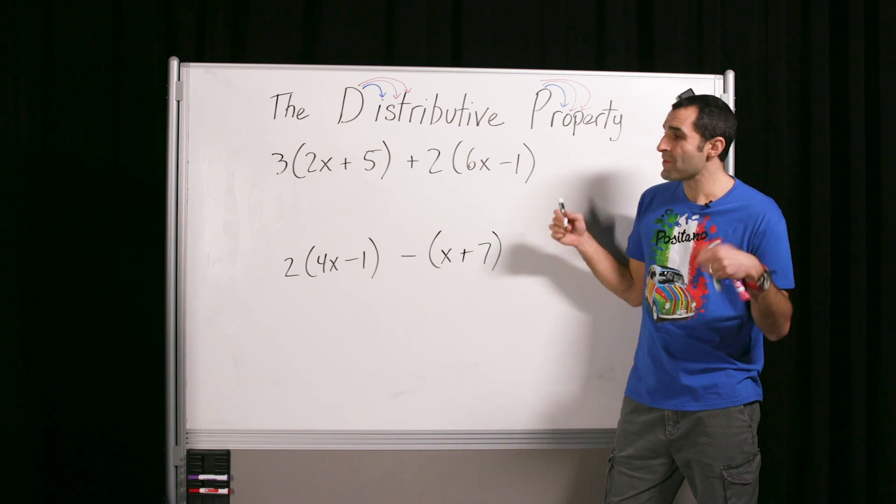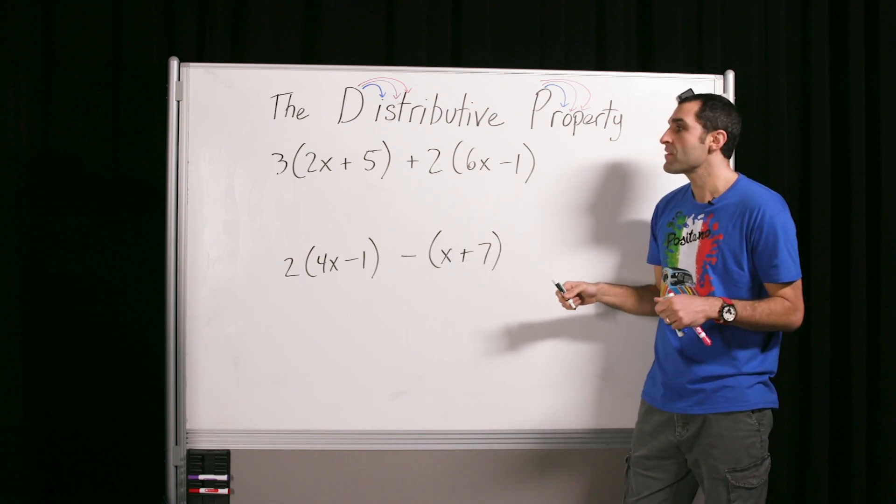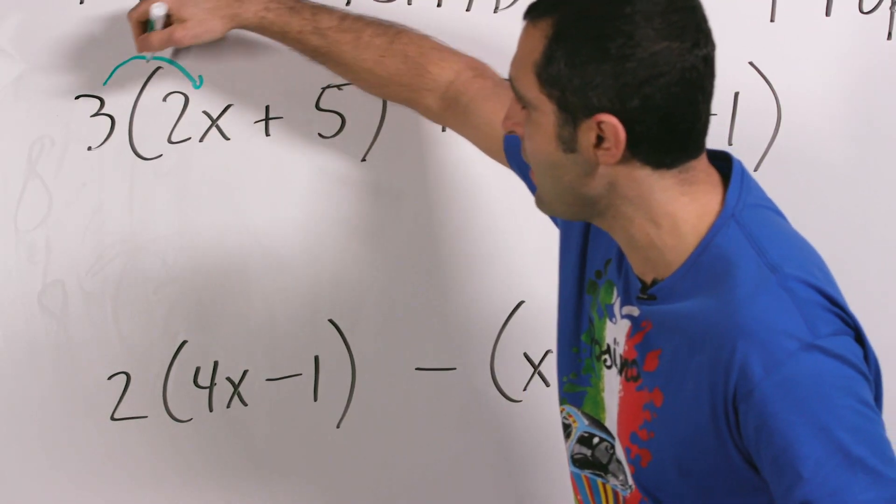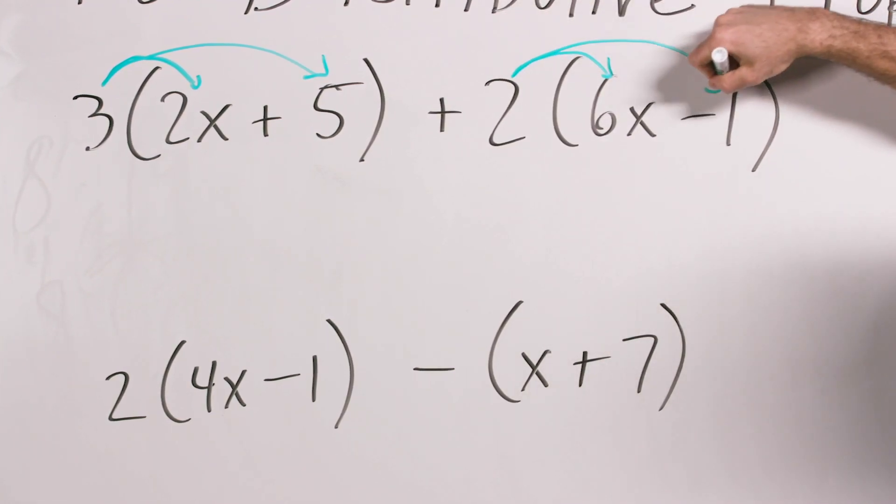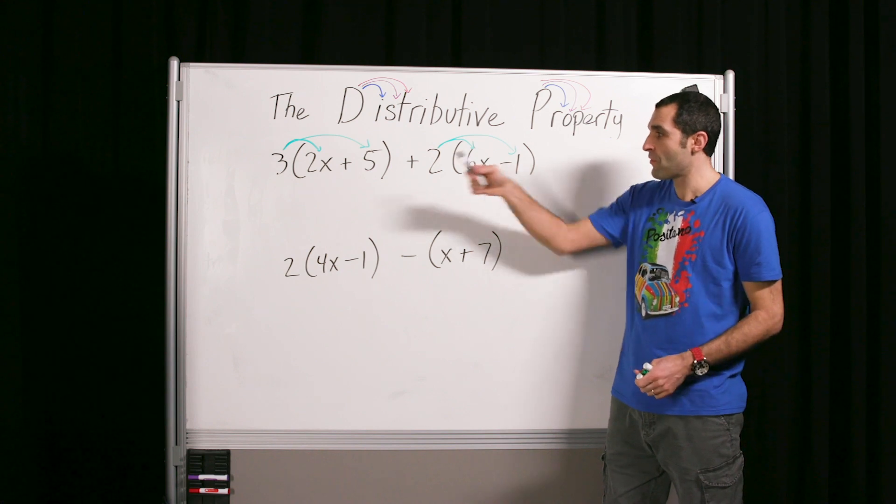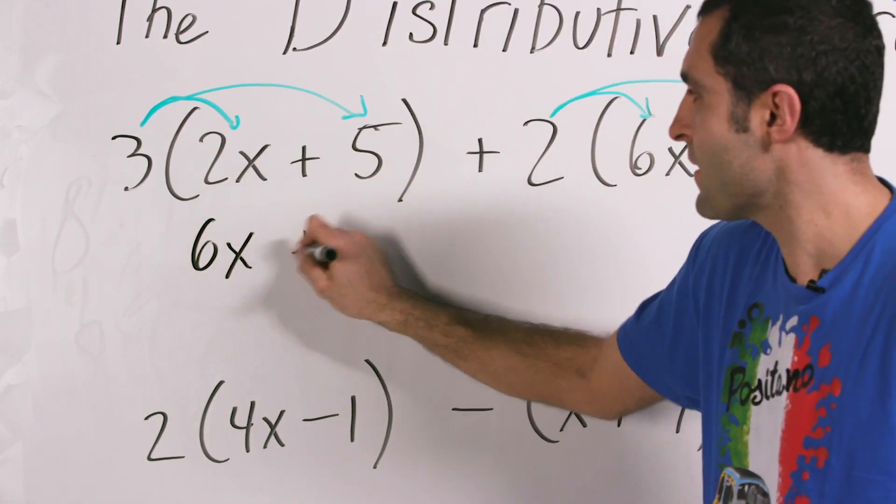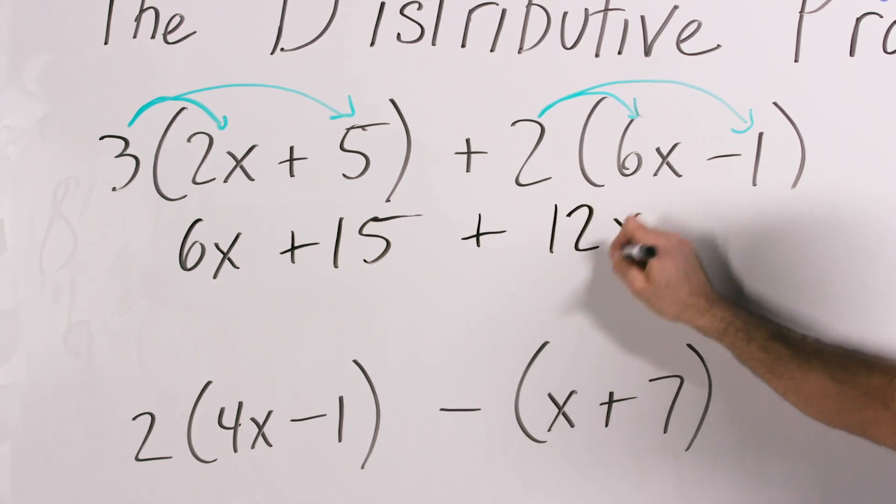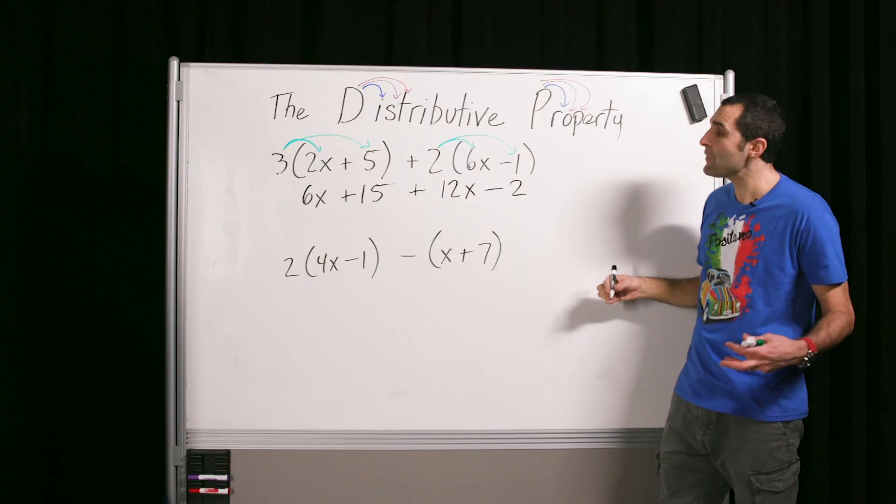Let's do a couple more. So the distributive property also works with simplifying expressions like this. You'll notice we have X's in these little exercises. So we distribute like we've been doing before. The three distributes. And the two distributes. All right. So now that I sang like a duck, we can distribute the 3 and the 2. Let's do it. So we got 3 times 2x is 6x. 3 times 5 is positive 15. Like that. Distribute plus 2 to 6x is 12x. Distribute 2 to minus 1. 2 times minus 1 is minus 2.